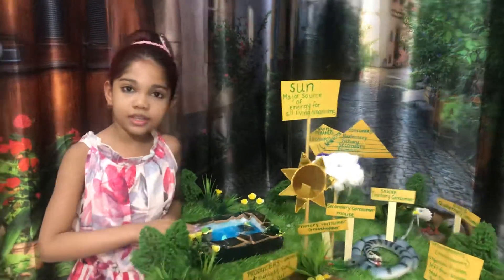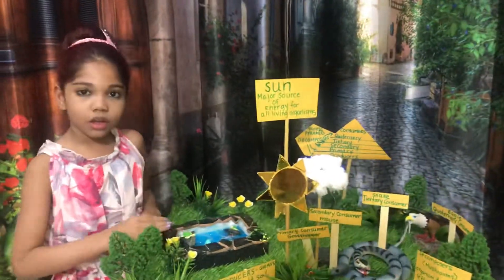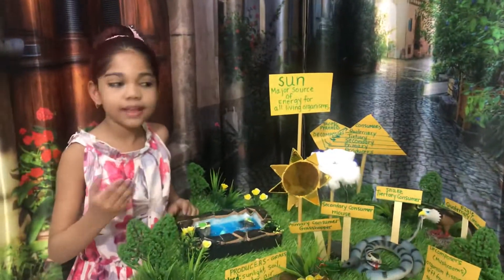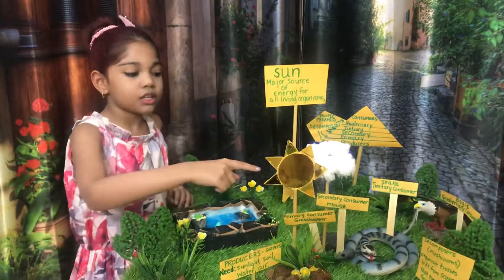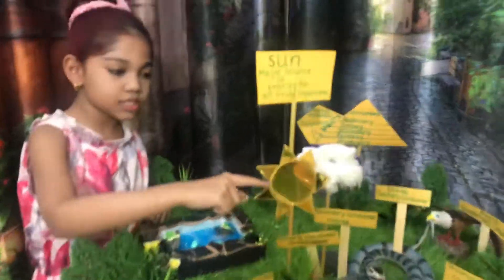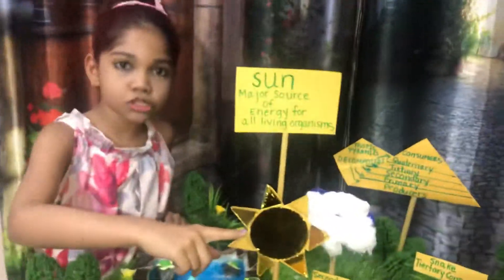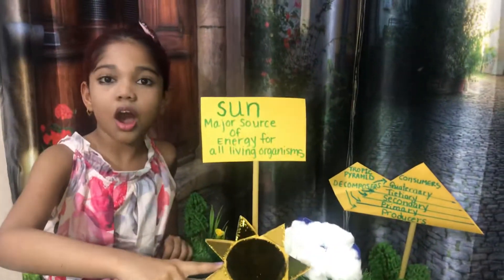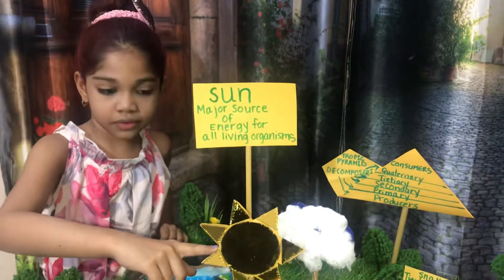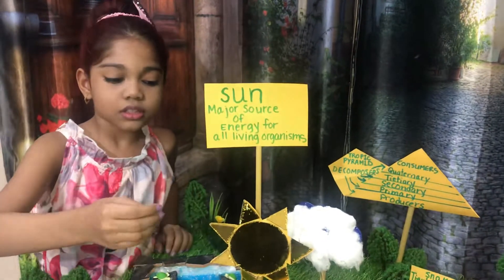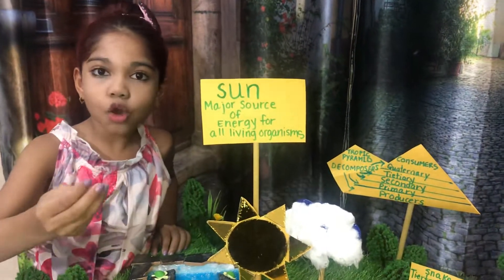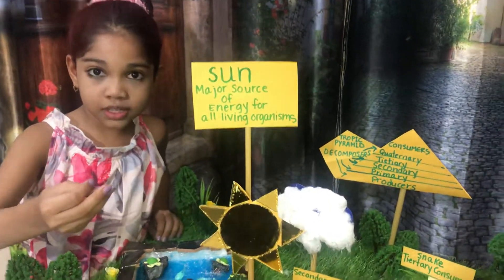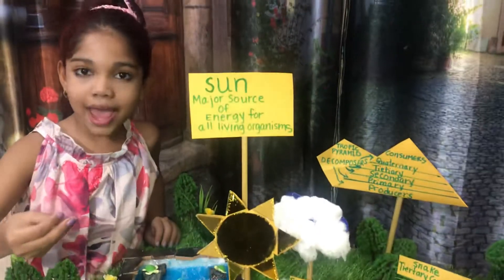In this example of a grassland food chain, the sun is the major source of energy of all living organisms and producers.